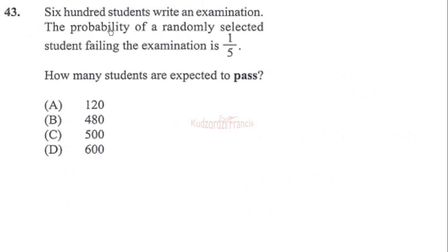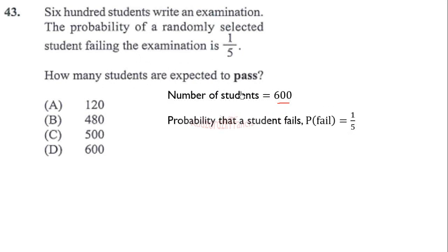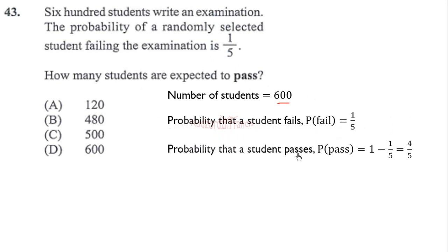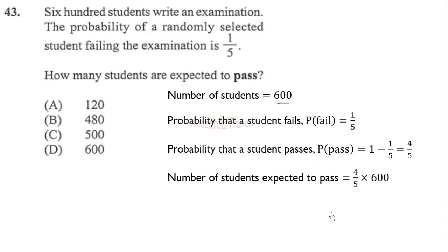Question 43: 600 students write an examination. The probability of a randomly selected student failing the examination is one out of five. How many students are expected to pass? The total number of students is 600, and the probability of failing is one over five. Since probabilities must sum to one, the probability that a student passes is one minus one over five, which equals four over five.